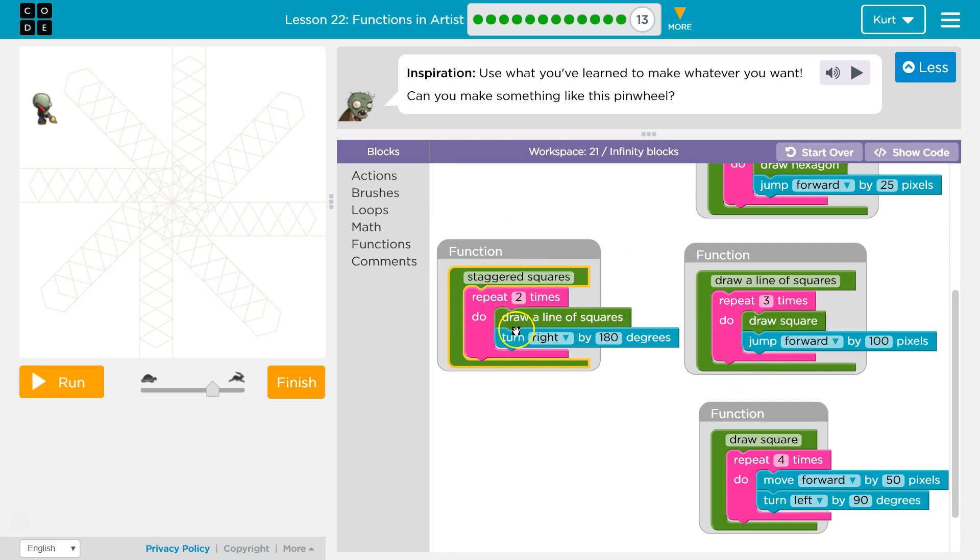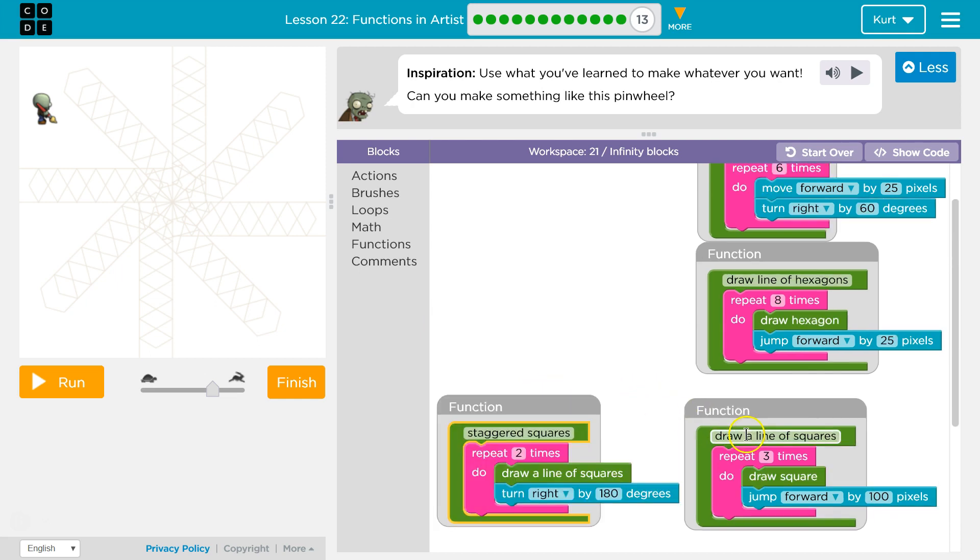Once that's all done, we go back here, turn right, 180 degrees, zoop, and draw another line. Okay, so that starts us off with a line of squares.